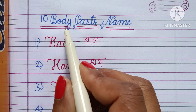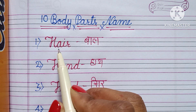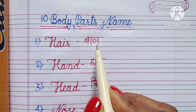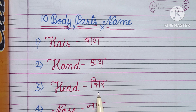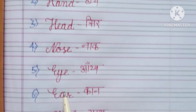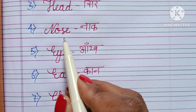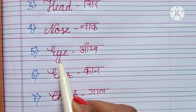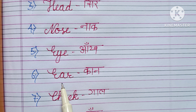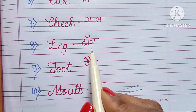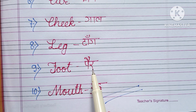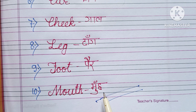Ten body parts names: Hair - Hair means Baal. Hand - Hand means Haath. Head - Head means Sar. Nose - Nose means Naak. Eye - Eye means Aankh. Ear - Ear means Kaan. Cheek - Cheek means Gal. Leg - Leg means Taang. Foot - Foot means Pair. Mouth - Mouth means Mugh.